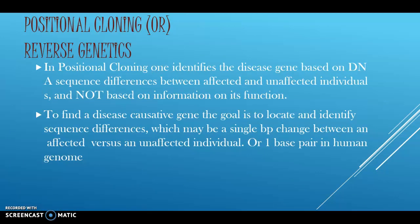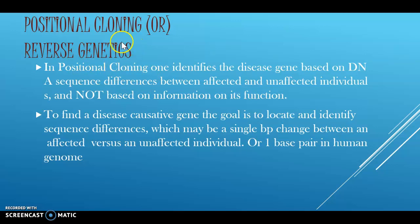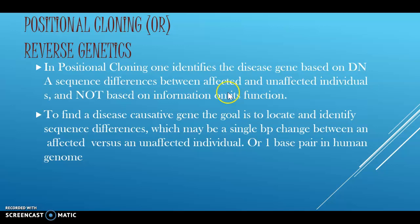Cloning of the disease gene whose function is not known, but the position of the gene is known, is also called reverse genetics or positional cloning. In positional cloning, one identifies the disease gene based upon DNA sequence differences between the affected and the unaffected individual, and not based on information about its function. The goal is to locate and identify sequence differences, which may be a single base pair change between the affected versus an unaffected individual — or one base pair in 3 million base pairs of DNA, the size of the human genome.